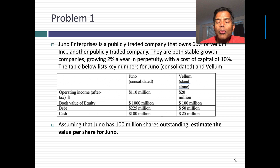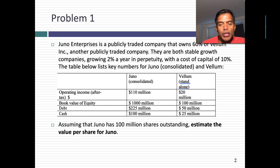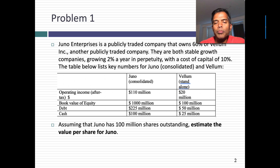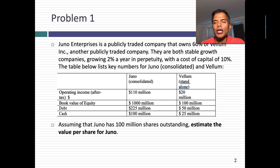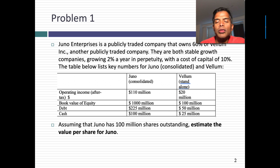Accounting around the world requires that you consolidate your financials. In this particular problem, you're told that they're both stable growth companies growing 2% a year in perpetuity. You're given the same cost of capital for both and the key numbers for both companies. When you're given information for a company with cross-holdings, the key words you're looking for are what kinds of financials you're given. I've given you the consolidated financials for Juno, which is the parent company, and Vellum, which is the subsidiary, plus the standalone for the subsidiary — operating income, book value of equity, debt, and cash. The problem asks: if you have 100 million shares outstanding in Juno, what would the value per share be?